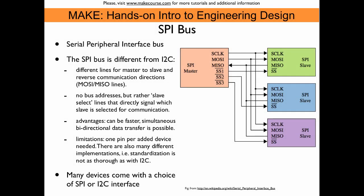SPI stands for Serial Peripheral Interface Bus. The SPI bus is fundamentally different from the I2C bus because it uses more than just two lines to communicate. The I2C bus just had a data line and a clock line, and the devices connected to the I2C bus were distinguished via device addresses transmitted through the bus.